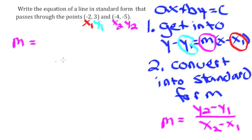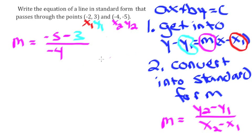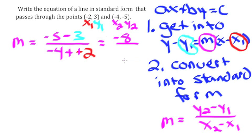Let's go ahead and find m. m equals y2 minus y1 over x2 minus x1, which is negative 5 minus 3 over negative 4 minus negative 2. Negative 5 minus 3 gives us negative 8. Negative 4 minus negative 2 becomes negative 4 plus 2, which is negative 2. So m equals negative 8 over negative 2, which is positive 4, because a negative over a negative is a positive.